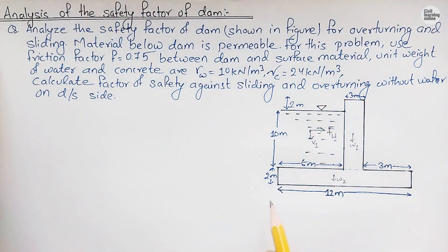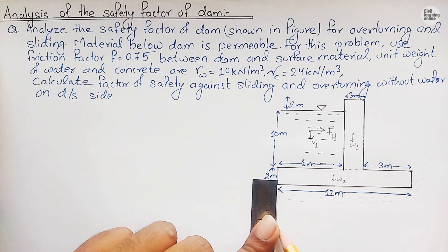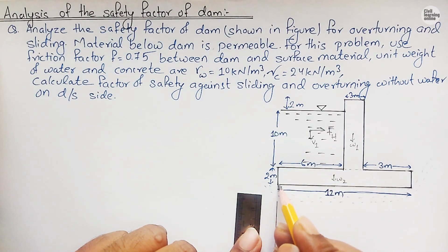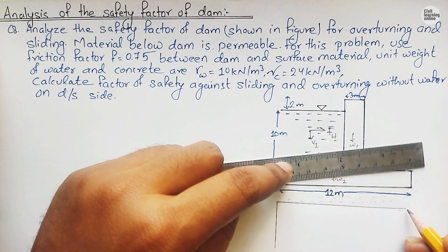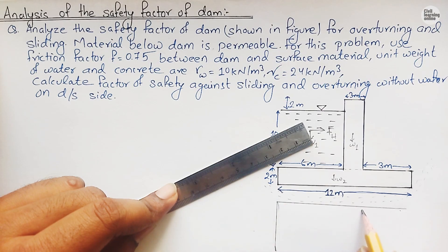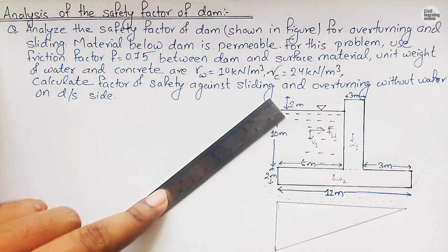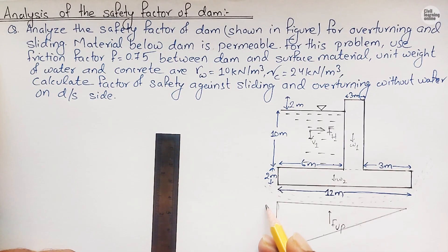The material below the dam is permeable, meaning water seeps through the soil beneath the dam. When water seeps under the dam, it exerts an upward pressure — called uplift pressure. The maximum pressure occurs at the upstream end where the water head is highest, and as the water travels under the dam the pressure decreases, reaching zero at the downstream end, forming a triangular distribution.